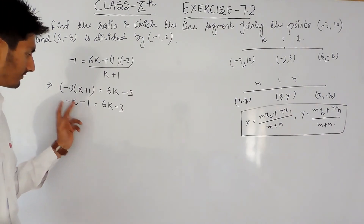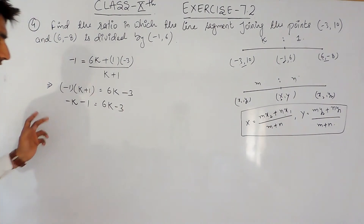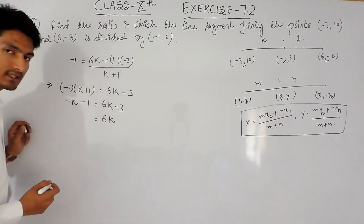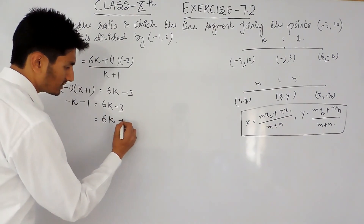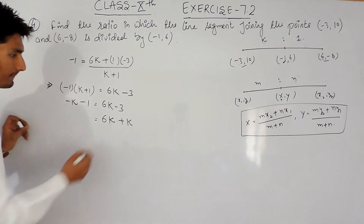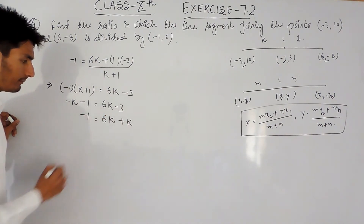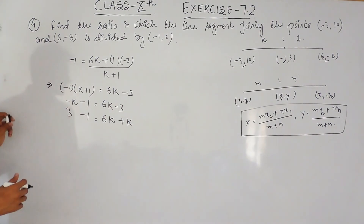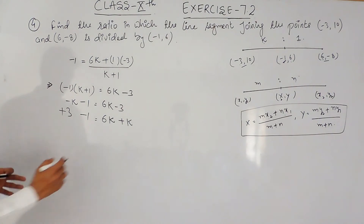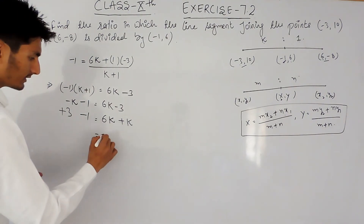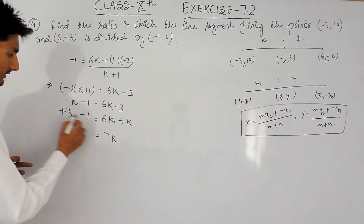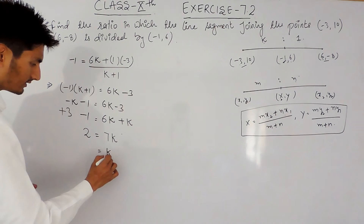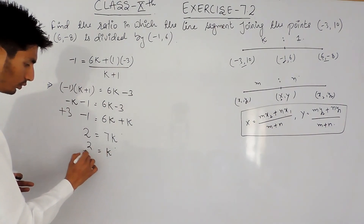Now shifting variables to one side and constants to the other: 6k remains, and -k moves to the right side becoming +k, so we get 6k + k = 7k on the left. The -1 stays and -3 moves to the right becoming +3, giving -1 + 3 = 2. So 7k = 2, which means k = 2/7.